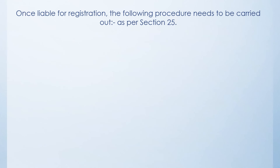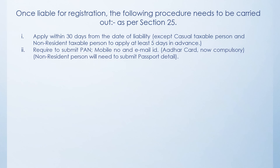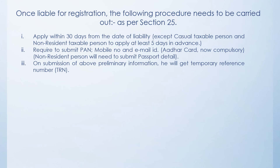Once liable for registration, the following procedure has to be carried out as per section 25. First, you have to apply within 30 days from the date of liability. However, in the case of a casual taxable person and non-resident taxable person, you have to apply 5 days in advance. You are required to submit the PAN number, mobile number, email ID, and now the Aadhaar card is also compulsory. However, if you are a non-resident person, then you have to submit passport details. On submitting this preliminary information, the government will give you a TRN number — that is a temporary reference number.